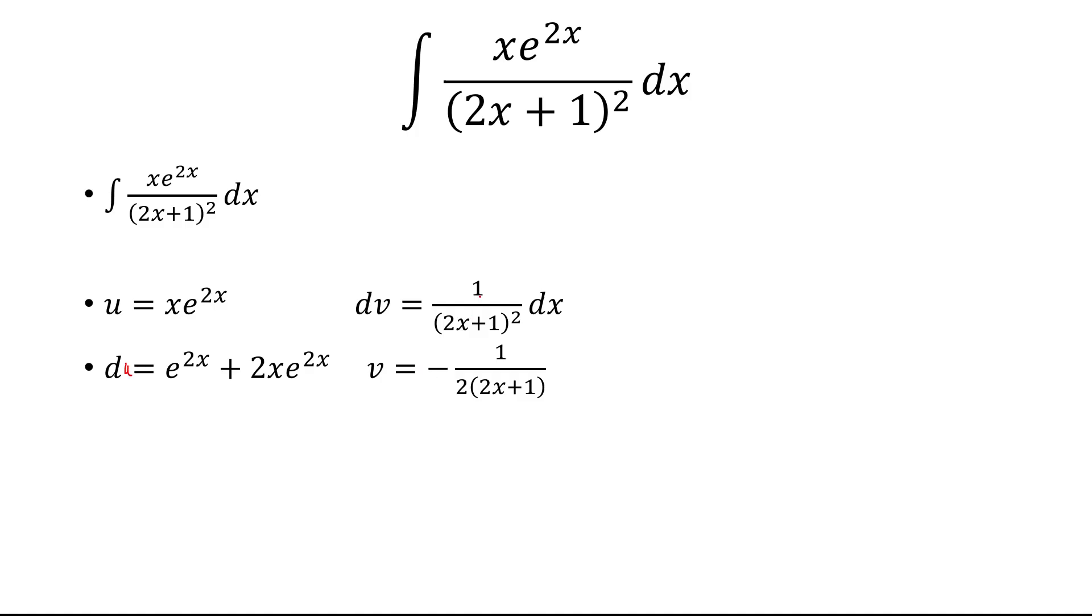And then the anti-derivative of 1 over 2x plus 1 squared. We can treat this as 2x plus 1 raised to the negative second power. So we'll add 1 to the exponent, divide by that exponent, and then the chain rule says multiply by 2, so we'll have to divide by 2.